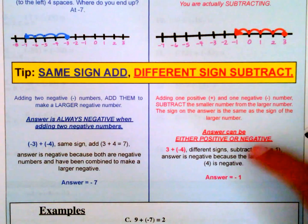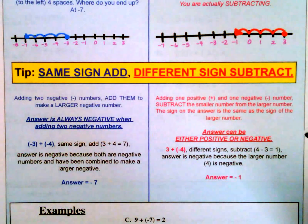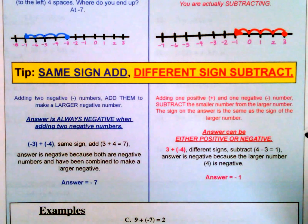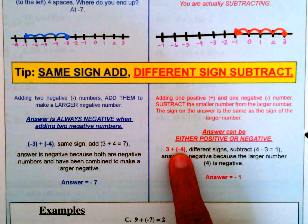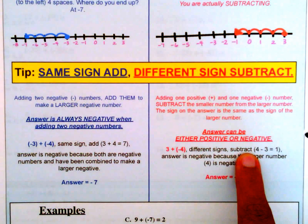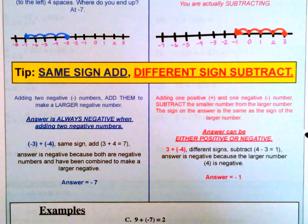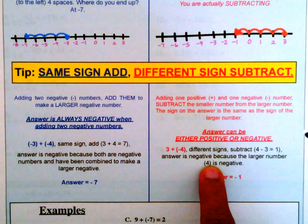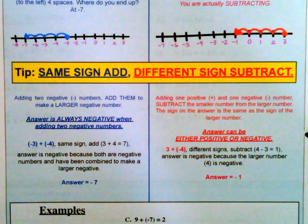For one positive and one negative number, you subtract the smaller from the larger. The sign of the answer matches the sign of the larger number. In Example B, 3 plus negative 4: different signs, so we subtract — 4 minus 3 equals 1. The larger number, 4, is negative, so our answer is negative 1.